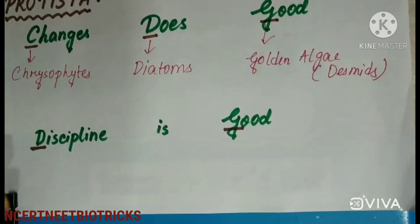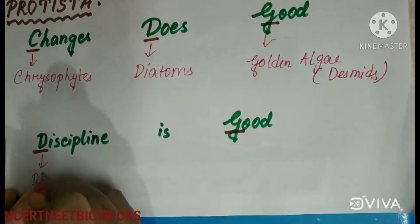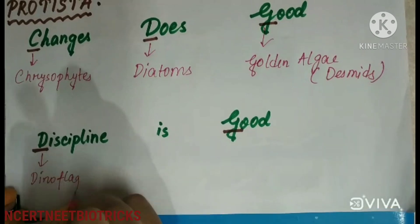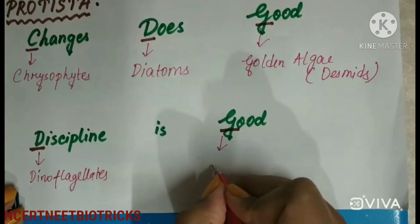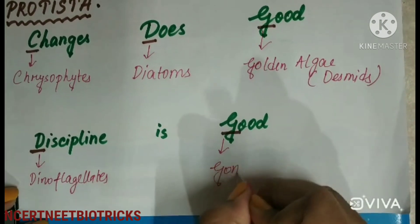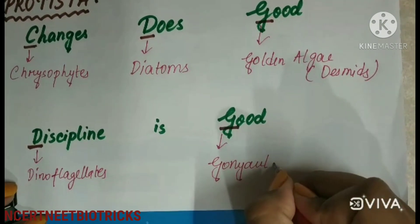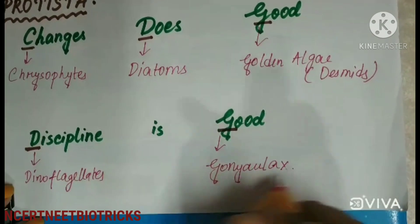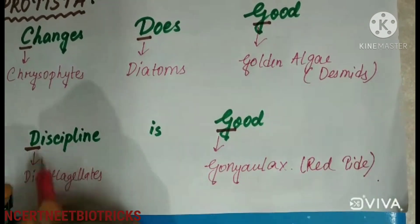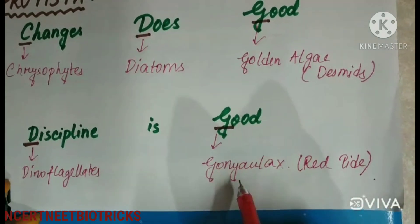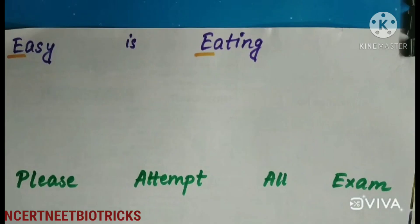Next, 'discipline is good' — D for Dinoflagellates and G for Gonyaulax. The example of dinoflagellates is Gonyaulax, which causes the red tide.